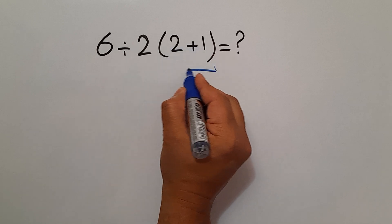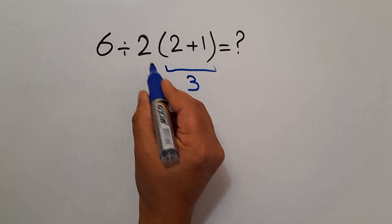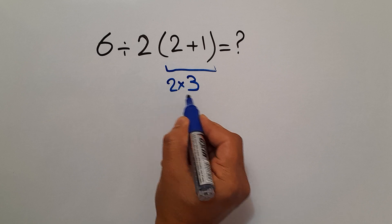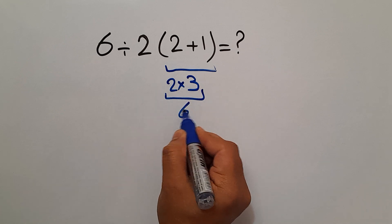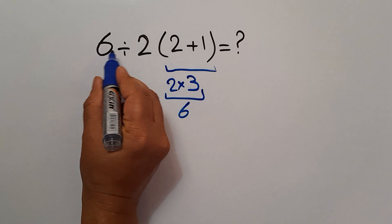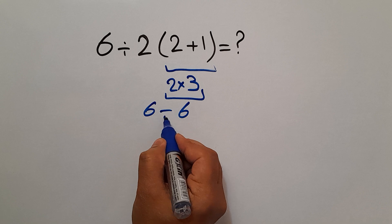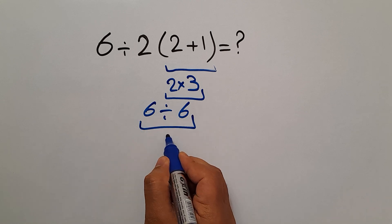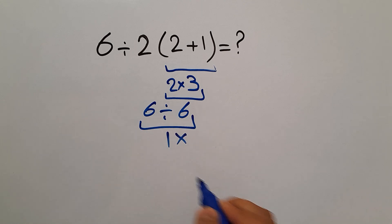2 plus 1 gives us 3. And 2 times 3, which equals 6. 6 divided by 6 gives us just 1. But this answer is not correct.